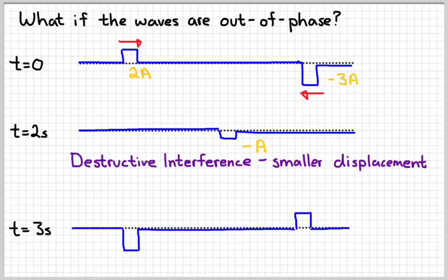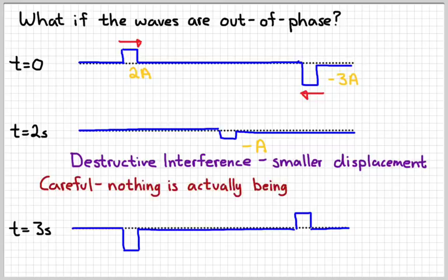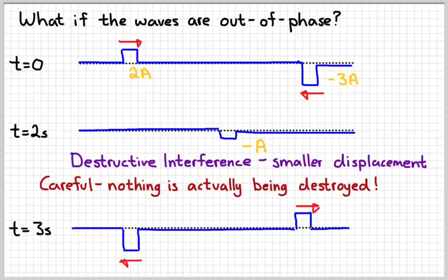The same idea about what happens afterwards still applies — the fact that the waves interfered at 2 seconds does nothing to affect what's happening to them at 3 seconds. Now, be careful: nothing is actually being destroyed. The two waves still exist just like they did before. The 3a wave is still going to the left; the 2a wave is still going to the right. Nothing has changed about those two waves. So the term destructive interference is kind of deceptive — it implies that something is being destroyed, but nothing is actually being destroyed. That's just a name we give to interference when we get a smaller amplitude as opposed to a larger amplitude.